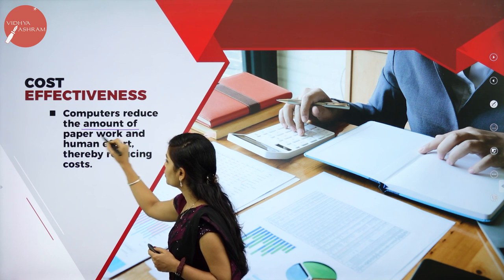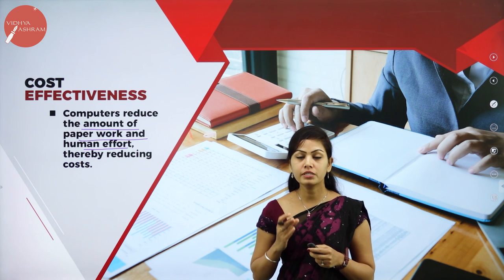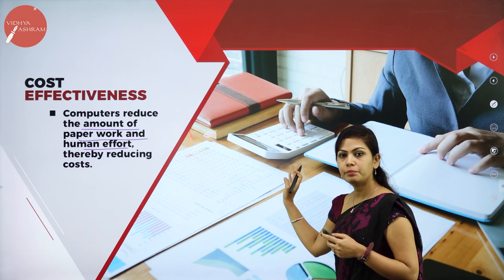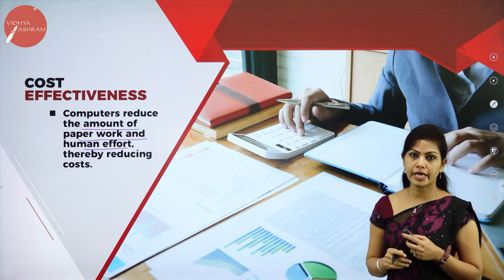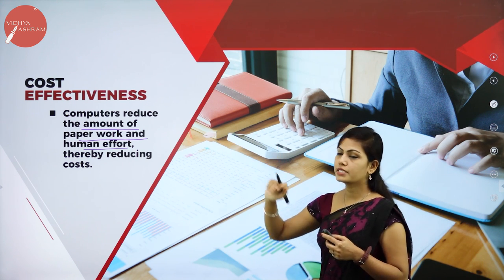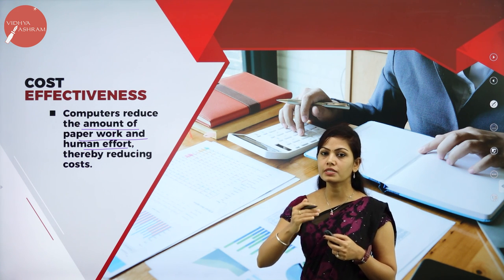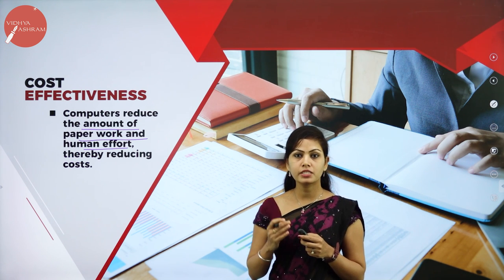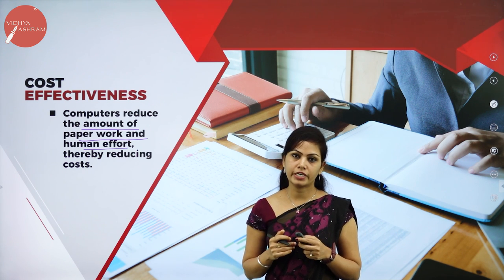The seventh characteristic is Cost Effectiveness. Computers reduce the amount of paperwork and human effort, thereby reducing cost. They can perform all scientific and arithmetic calculations, reducing all paper work. That is what we call cost effectiveness.